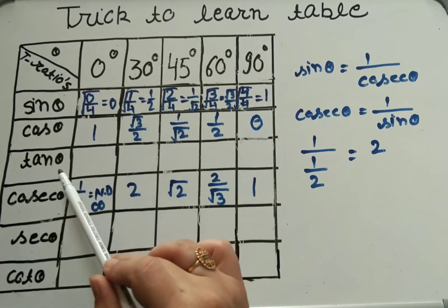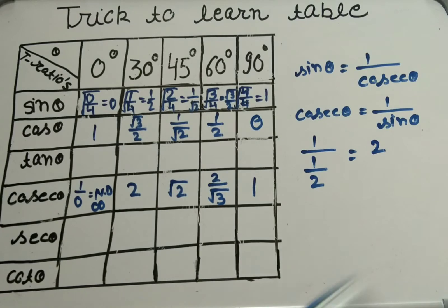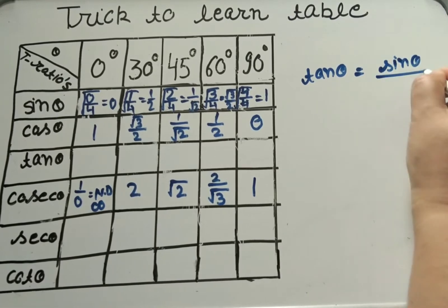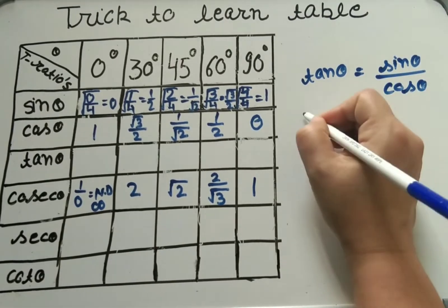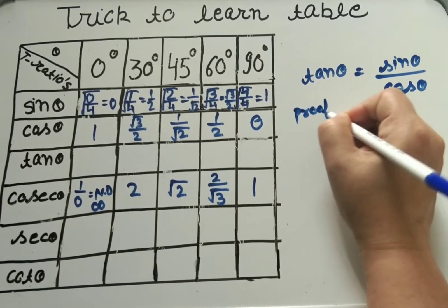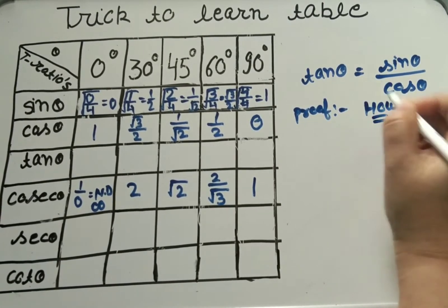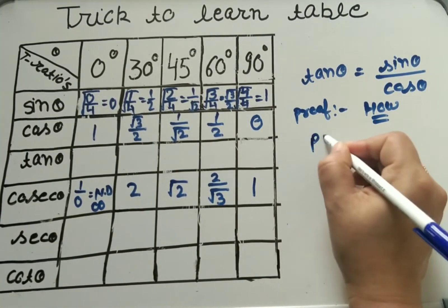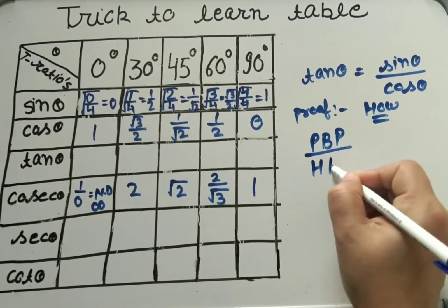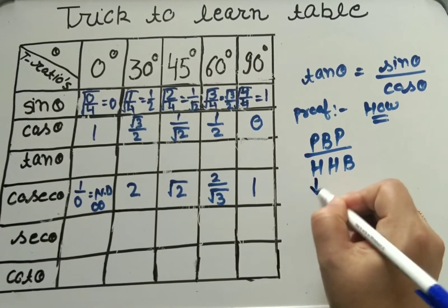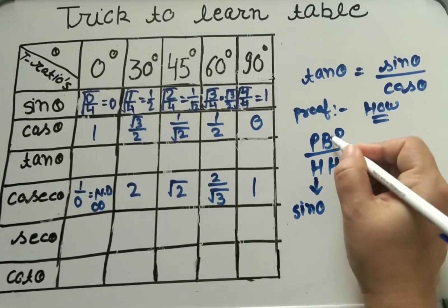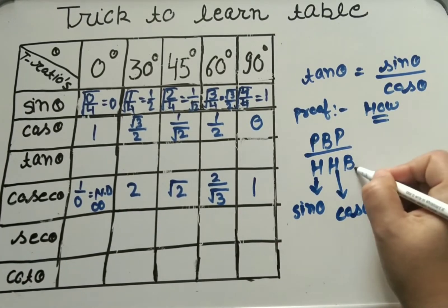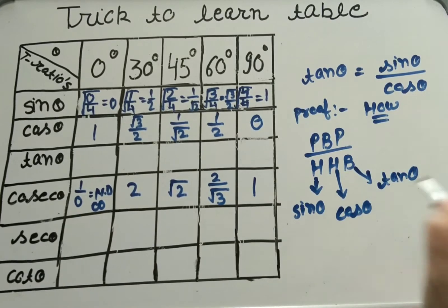Next let's discuss tan theta. From the first lecture using the mnemonic 'Pandit Bhadri Parsad Har Har Bol': P/H is sin theta, B/H is cos theta, and P/B is tan theta. So tan theta equals P upon B.